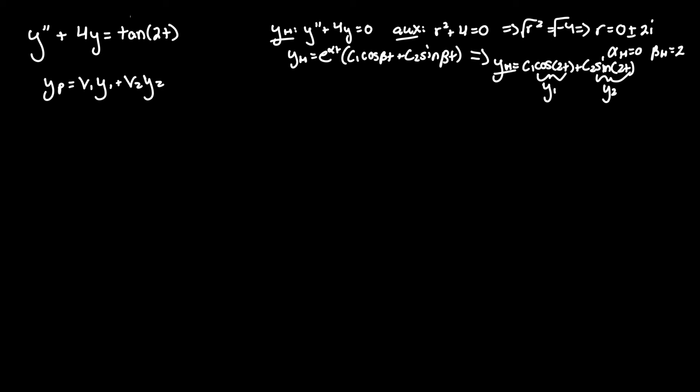And for a function like tan you can't use method of undetermined coefficients. It gets way too complex. Honestly for these types of problems you'd want to use variation of parameters. Moving on what we need to do is obviously find v1 and v2 since we already have y1 and y2.